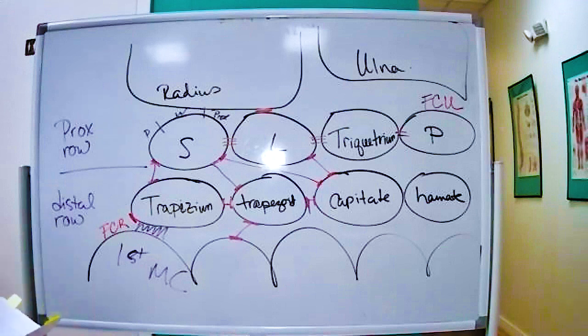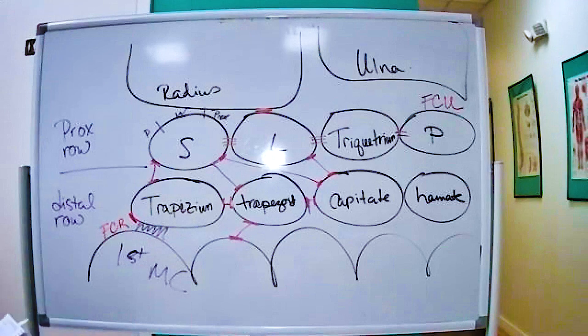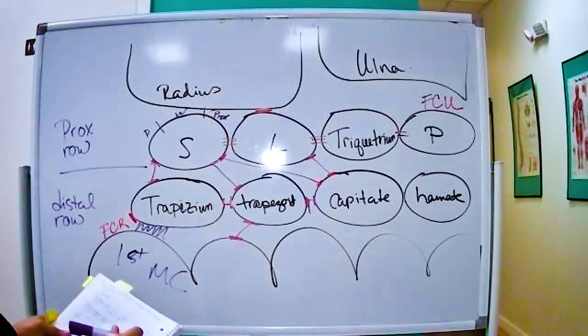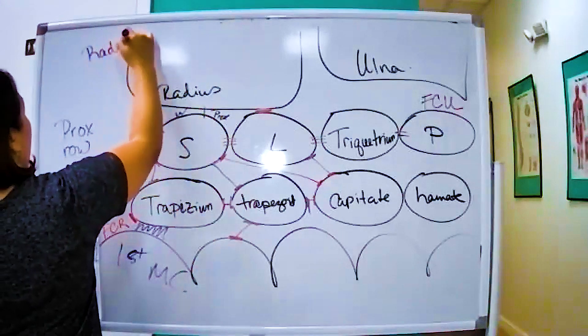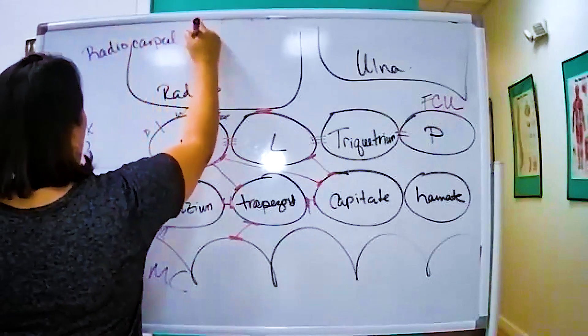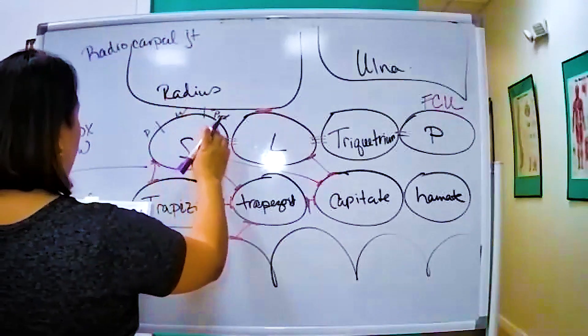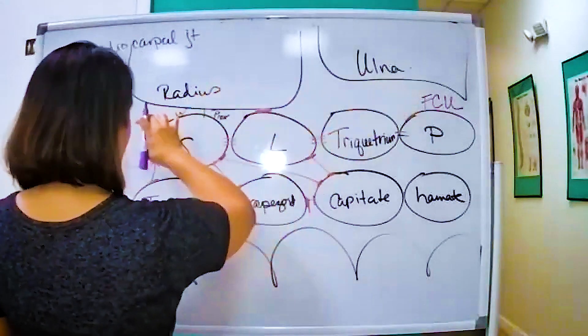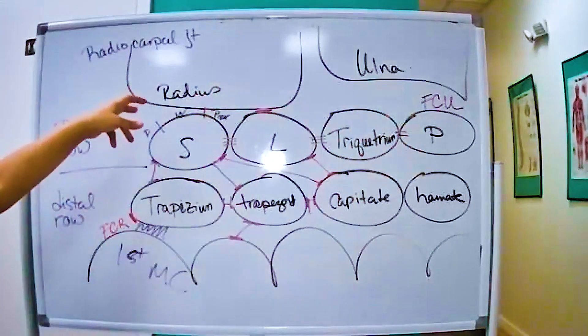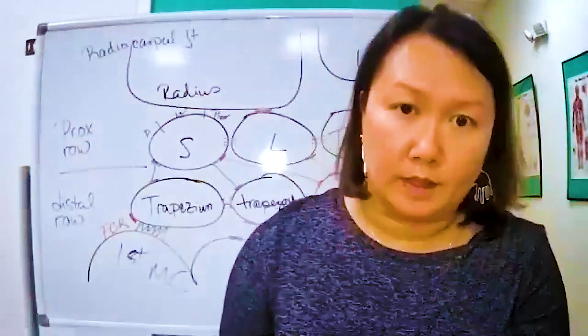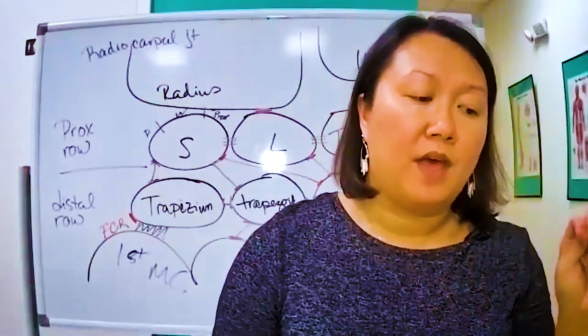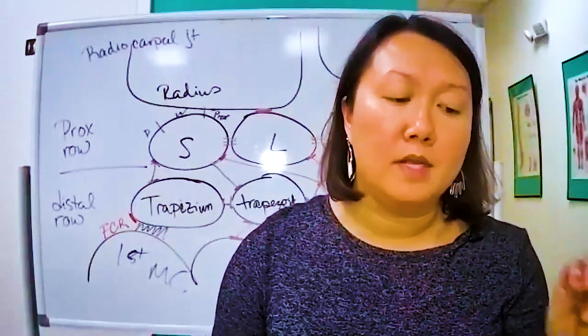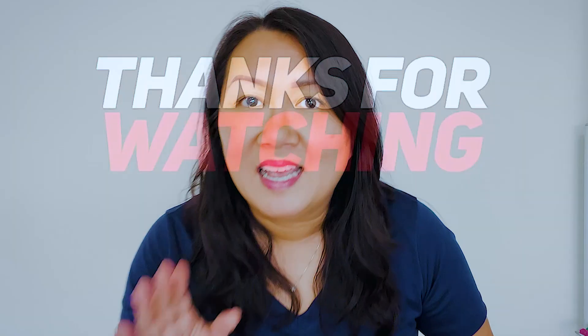So those are essentially the articulations which also mean there's some ligaments that are holding it together. Now the key thing is here to understand the joints. So the joints, you have the radial carpal joint. The radial carpal joint, that is a joint that holds the radius, the TFCC, and all of the proximal row bones. So then if that is a joint and something happens to the radial carpal level joint, that is essentially considered a carpal instability non-dissociative.